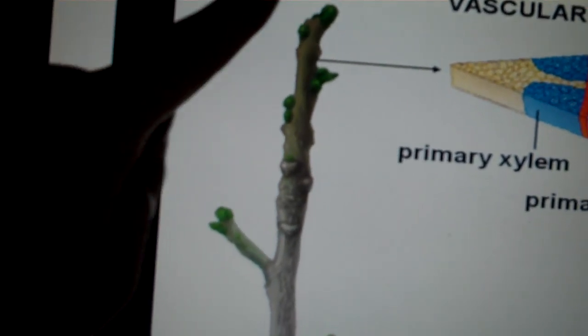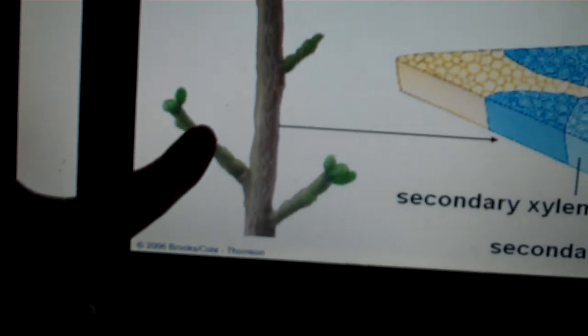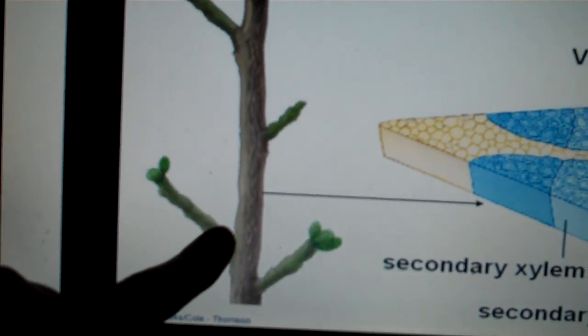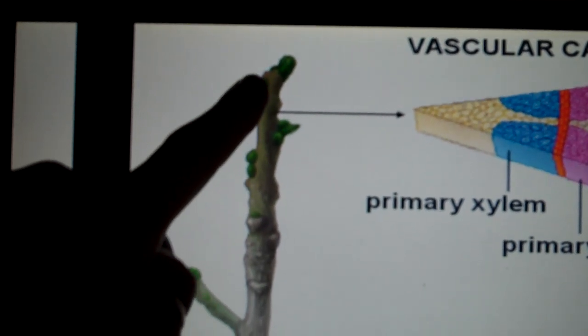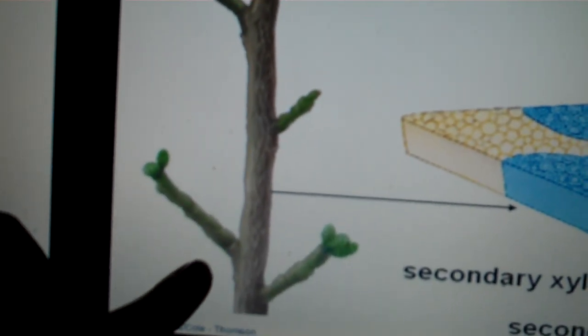If you look at a growing tree, you can see the bottom is wider or thicker than the top. Primary growth occurs here at the top, and secondary growth occurs here at the bottom.